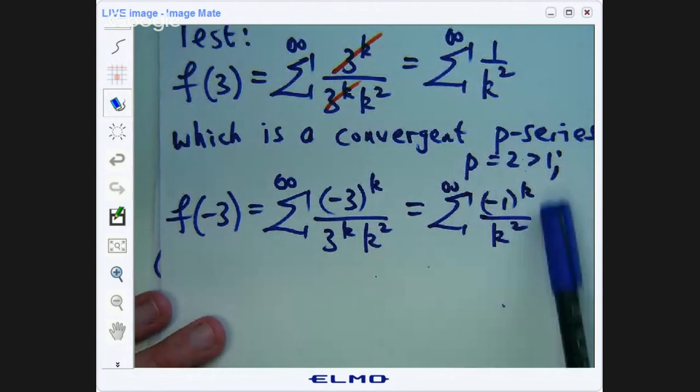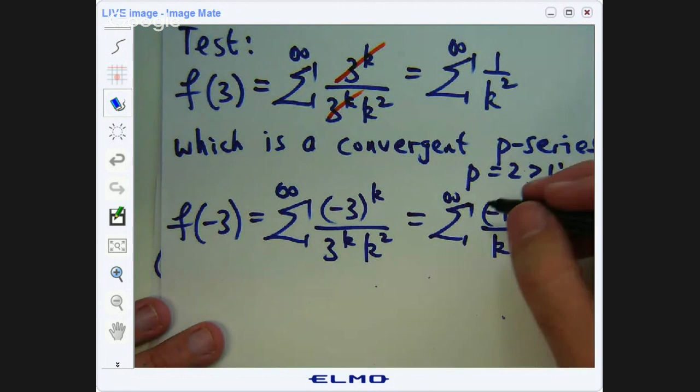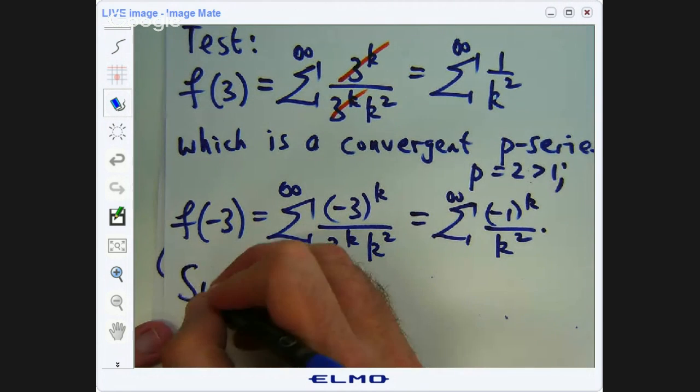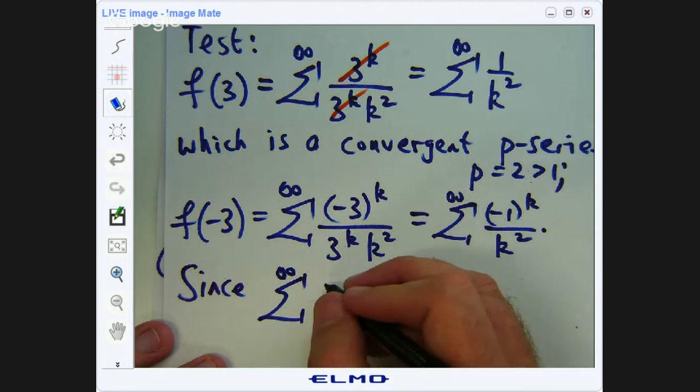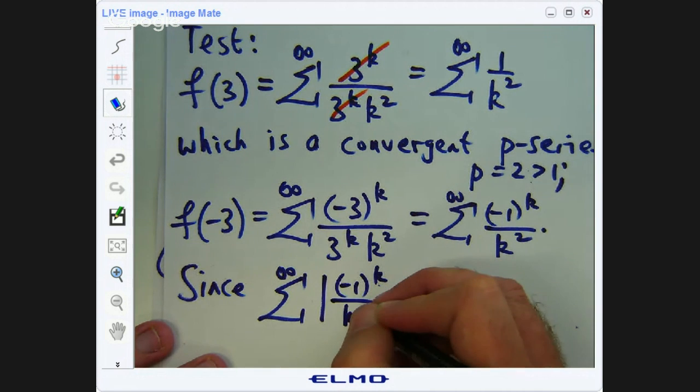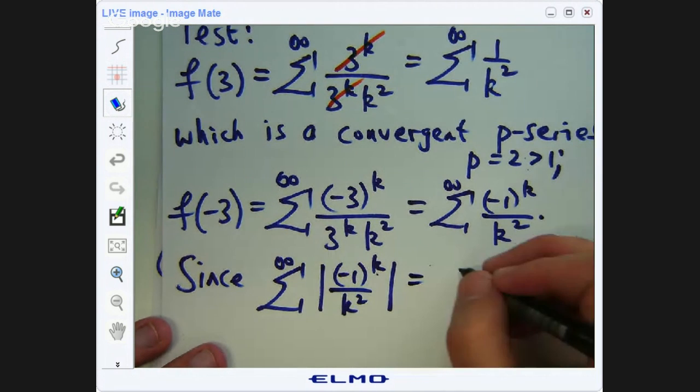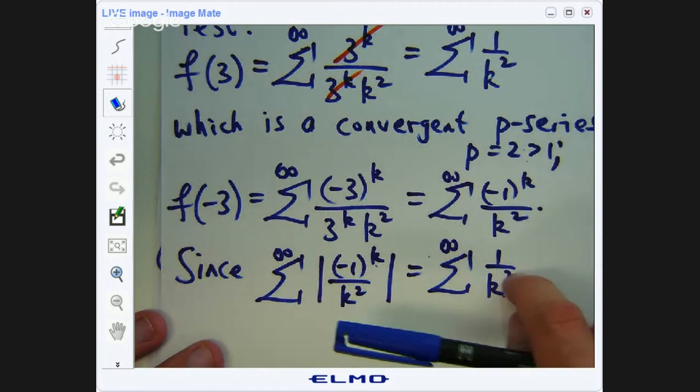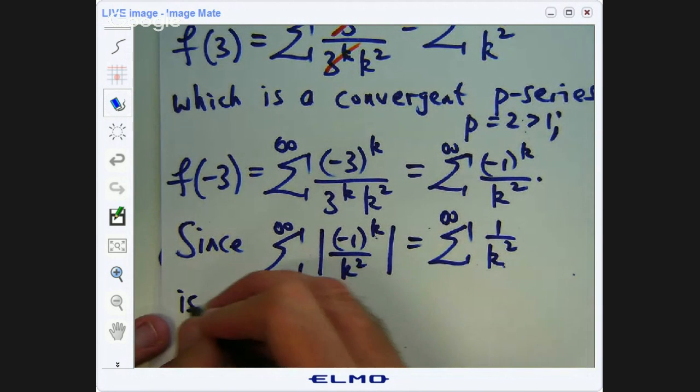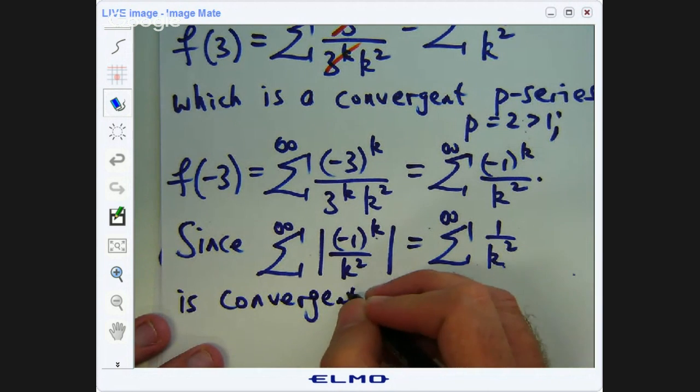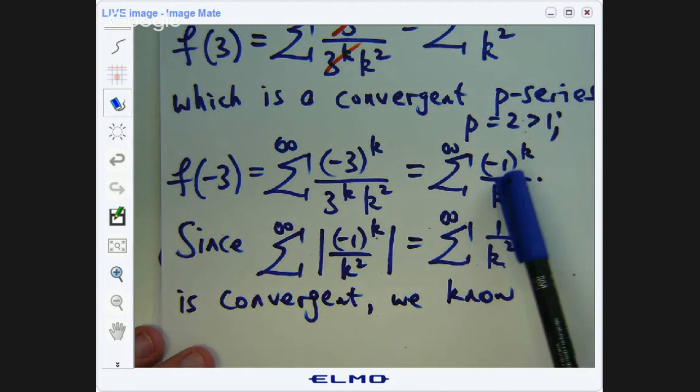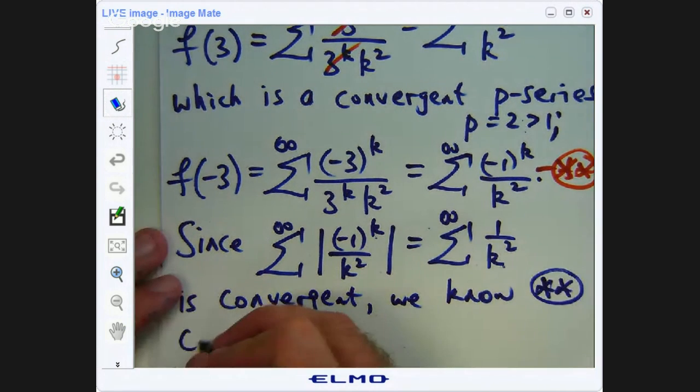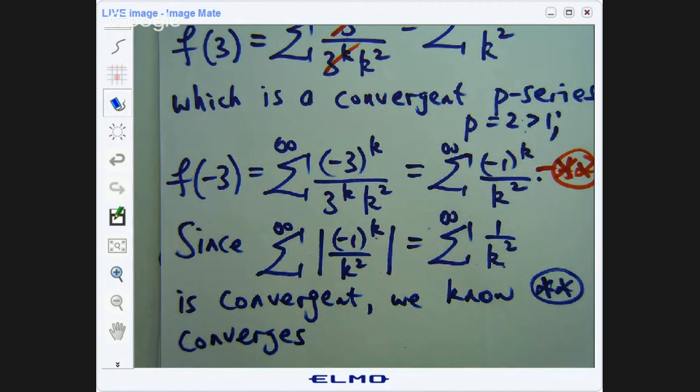And now the question is, does this series converge or diverge? Well, if you look at the absolute value of that, the top will just become 1 and you get the same series up here. So you can say, since the absolute value, this series absolutely converges, there's a theorem that tells you the original series has to also converge. So we know that this series is a convergent p-series. That tells us that the original series, let's call this double star.